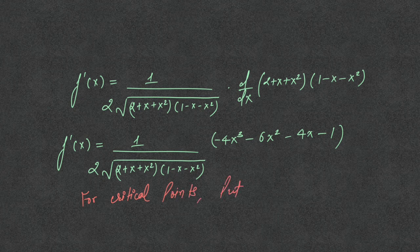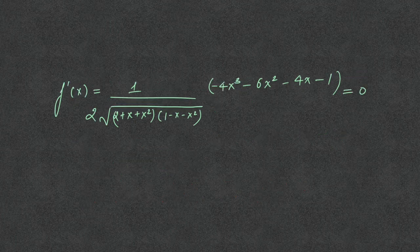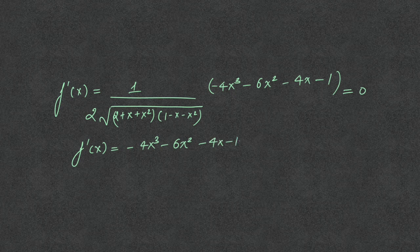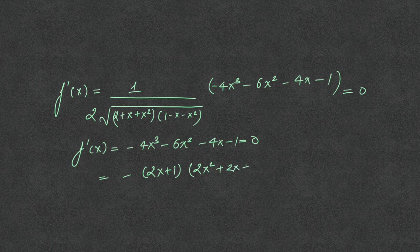Setting f dash x equal to 0 for critical points, we get minus 4x cubed minus 6x squared minus 4x minus 1 equal to 0.